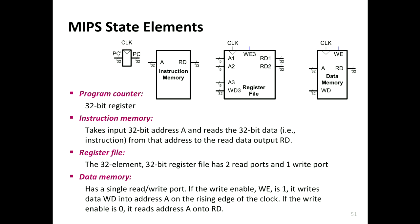Let's get started with a quick review of all the main state elements required in MIPS. We started off with the program counter — a 32-bit register that holds the address of the current instruction to be executed. You have the instruction memory where you load your programs as a sequence of instructions. You have the register file which contains 32 registers, each 32 bits wide, holding what we call the architectural state.